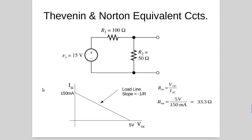That's a simplified Norton and Thevenin equivalent circuit analysis. We only needed any two of the three items — short circuit current, open circuit voltage, or network resistance — to find the third. Those three numbers together allow us to create both the Thevenin equivalent and the Norton equivalent.